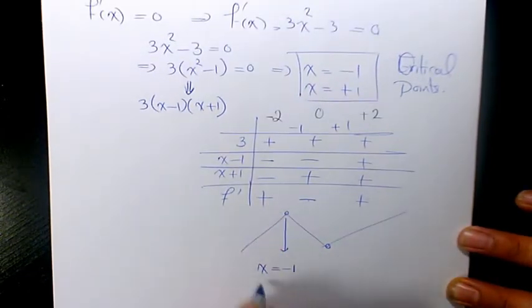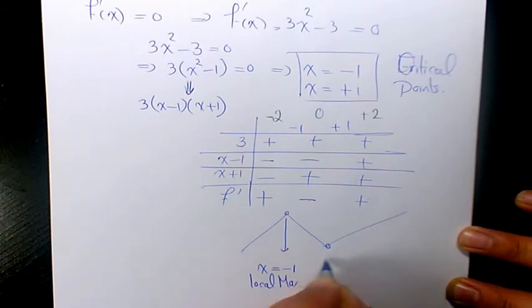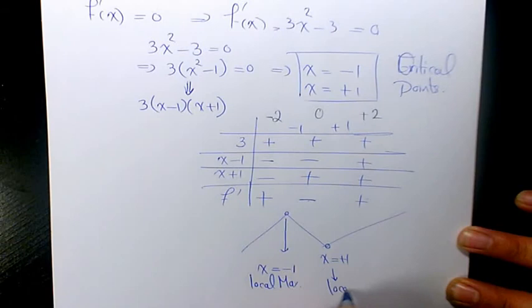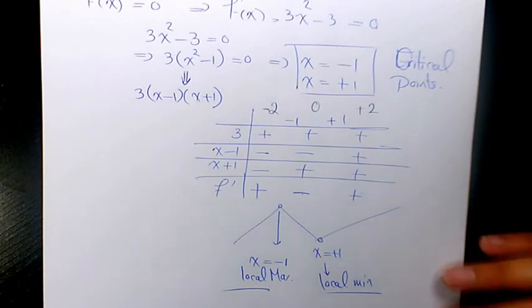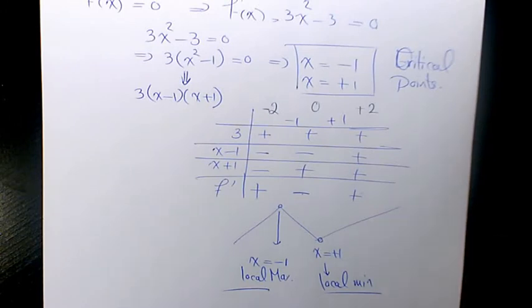to negative 1, we are dealing with local max, and x equals to positive 1 is going to be local min. So we have one local max and one local minimum. That's going to be the final answer.